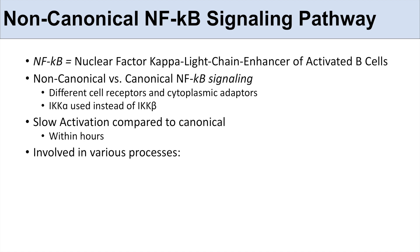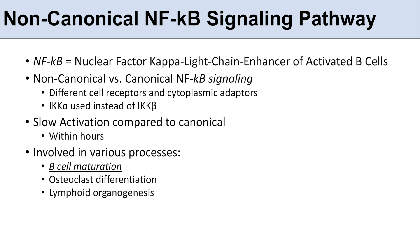The non-canonical NF-kappa-B signaling pathway is involved in various processes. One of the main processes is B-cell maturation. Another is osteoclast differentiation, and another is lymphoid organogenesis. A lot of it has to do with the immune system and some functions involved in bone remodeling.